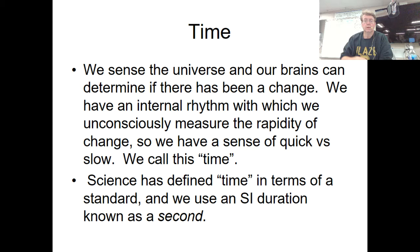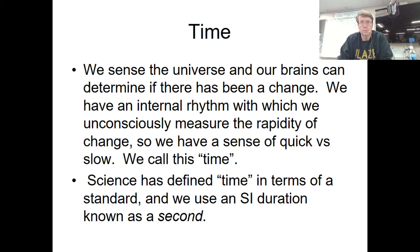When you measure things with our senses, we have a sense for things that happen quickly or slowly. There's this idea of a rate of change. In science, we use our definition of a second to define the interval of time that we watch over — and when things change, it's a rate change per second.